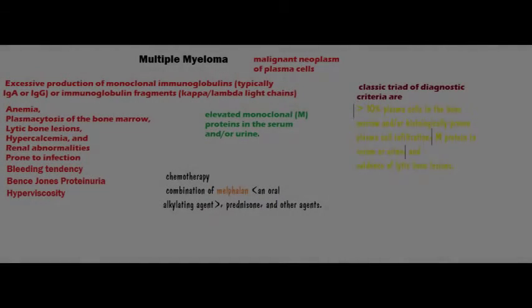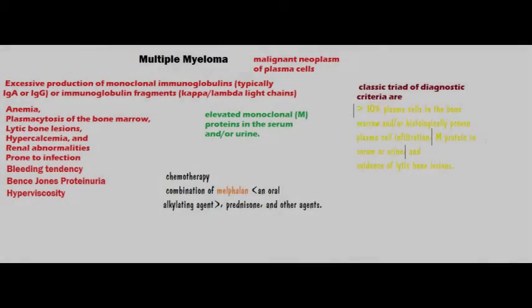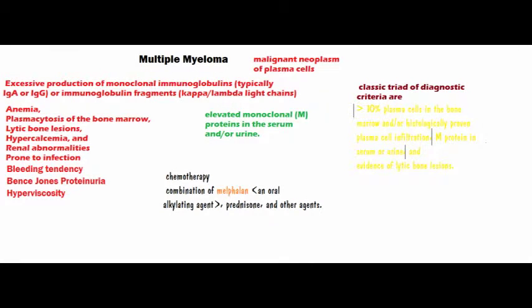Today I am going to discuss multiple myeloma. Multiple myeloma is a malignant neoplasm of plasma cells. It mainly occurs in elderly people, 60 years and above, and it is characterized by the appearance of M protein — that is, a monoclonal protein in serum. These plasma cells are derived from B lymphocytes.